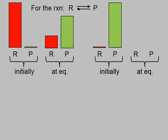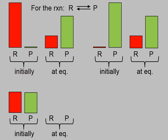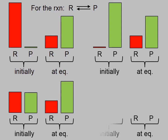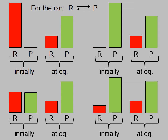If we start with another case — lots of product and almost no reactant — eventually that system will reach equilibrium. And you can see that, if we chose the amounts of substances correctly, the equilibrium system reached when we start with lots of product is identical to the equilibrium system reached when we start with lots of reactant. If we start with half and half, again we would reach the same equilibrium. I'm just trying to get you to understand that you don't have to always start with reactant — you can start with any combination of reactants and products, and that system will eventually reach equilibrium.